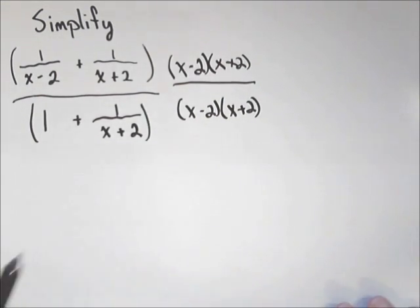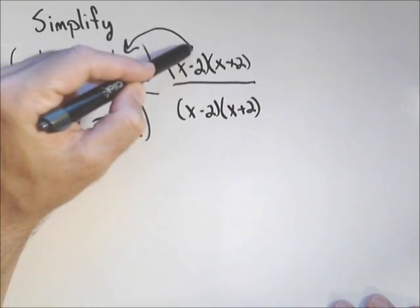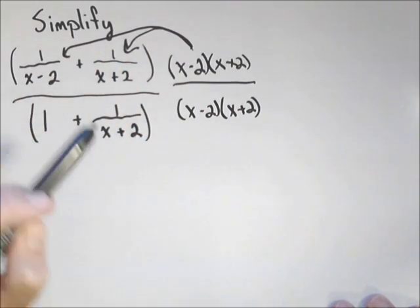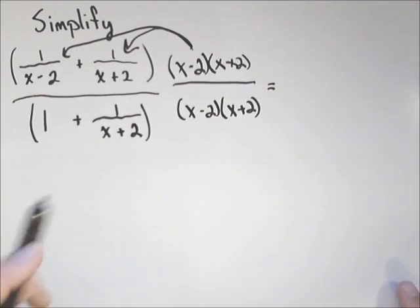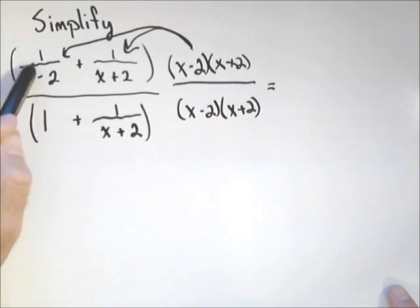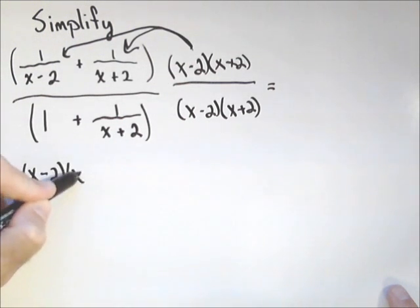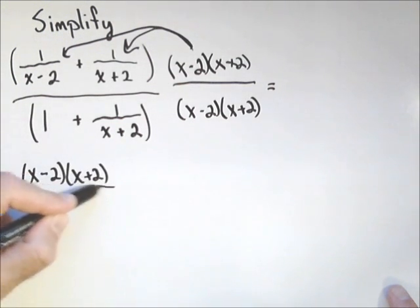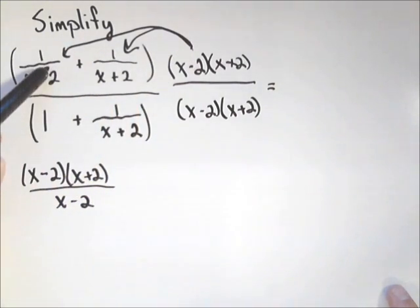Now one thing you have to be careful of is this multiplication distributes. It's gonna go to this piece and also to this piece. So in the numerator, when I do my multiplication, first off, I'm gonna have x minus two times x plus two times this one. So x minus two times x plus two over x minus two. So that's distributing to this first term.